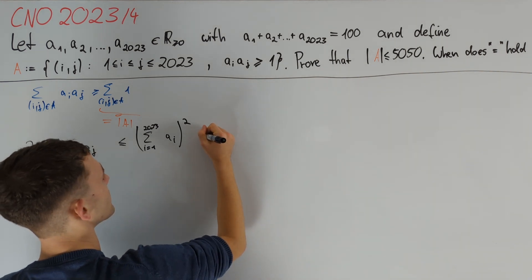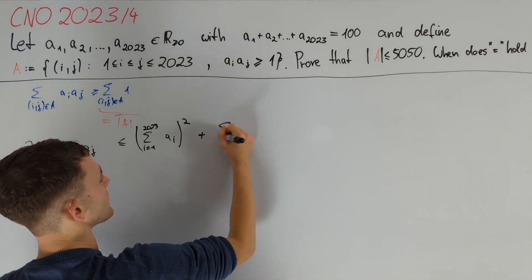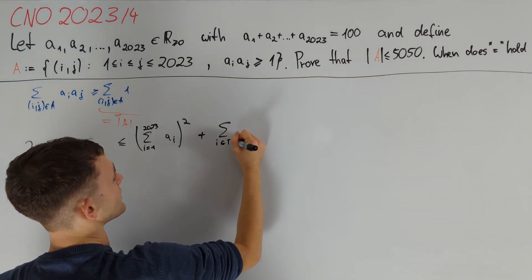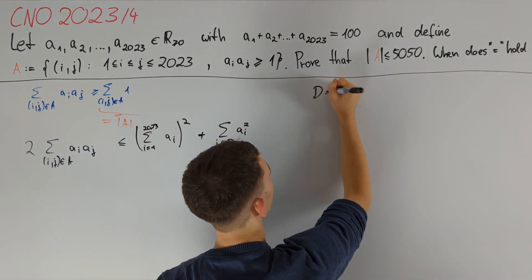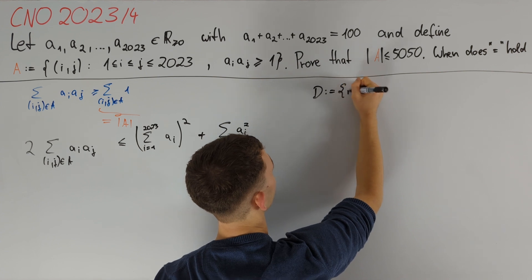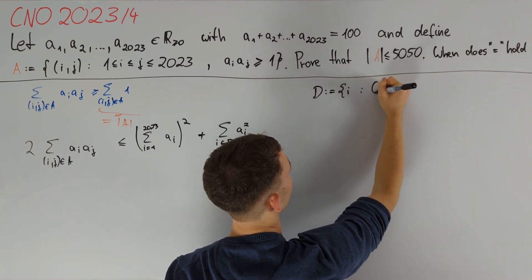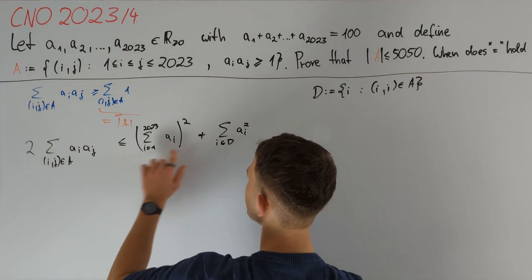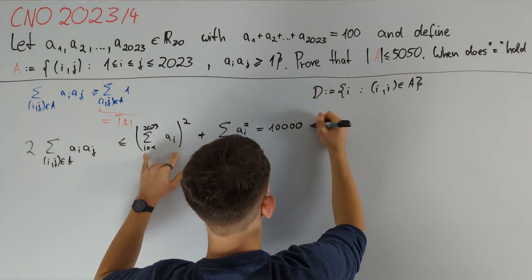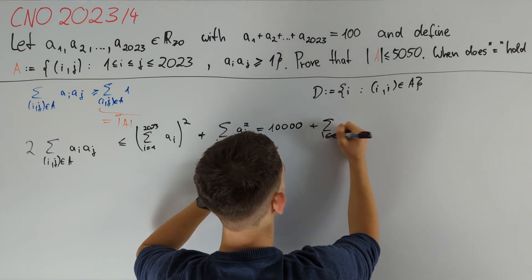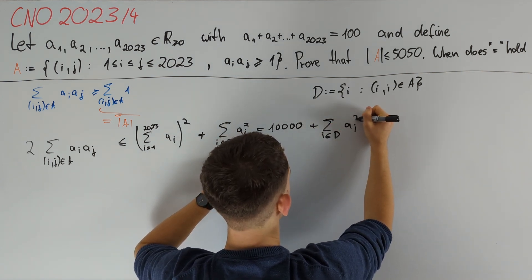But we have to be careful here because we overcount the a_i squared on the diagonal of A, and so we also have to add the sum of i in d of a_i squared, where we define d to be the set of i such that i,i lies in A.